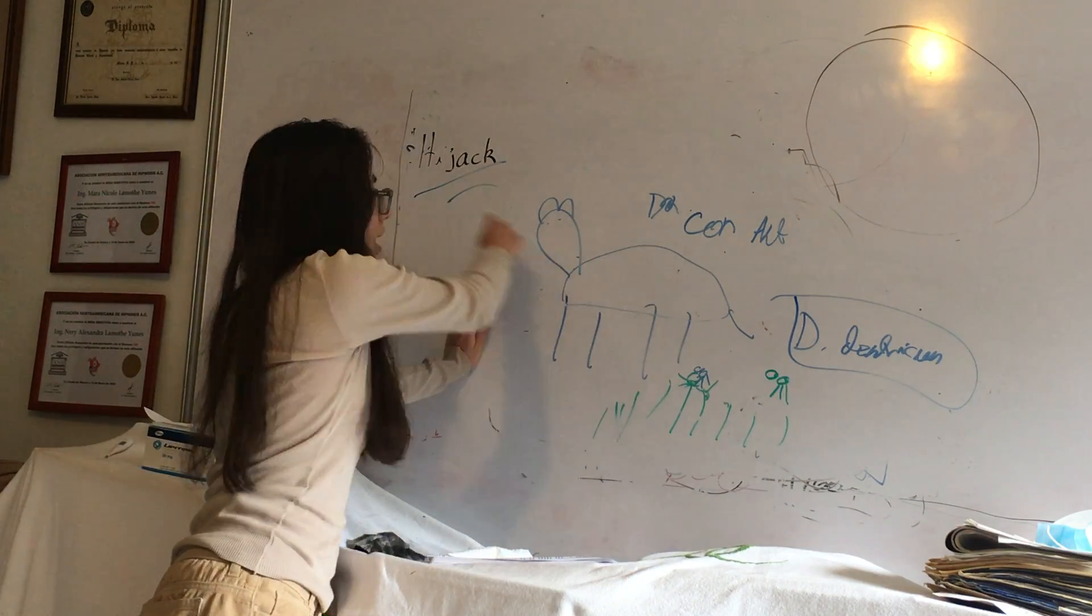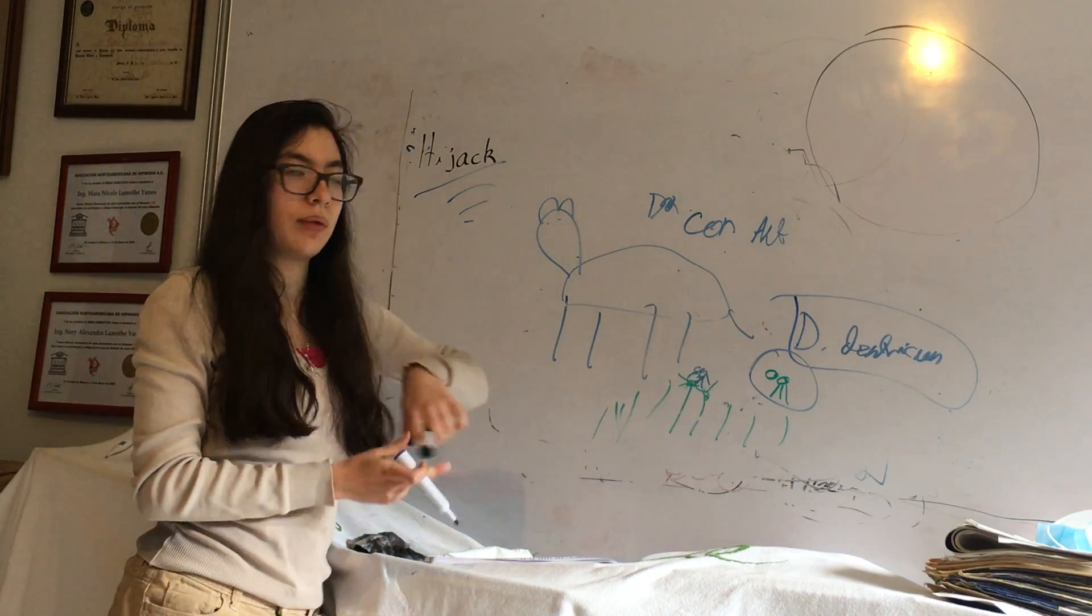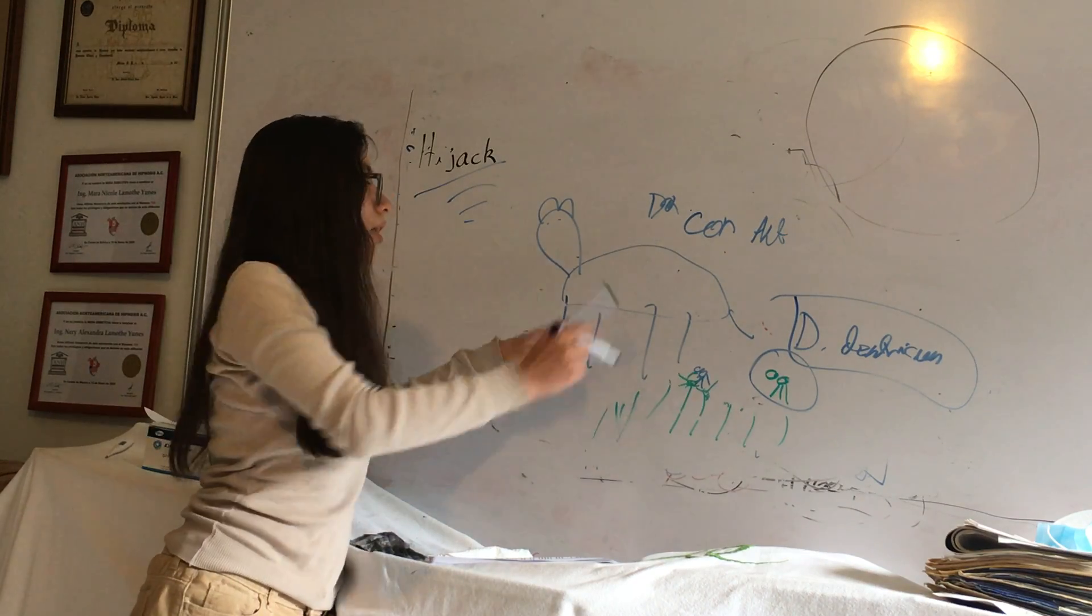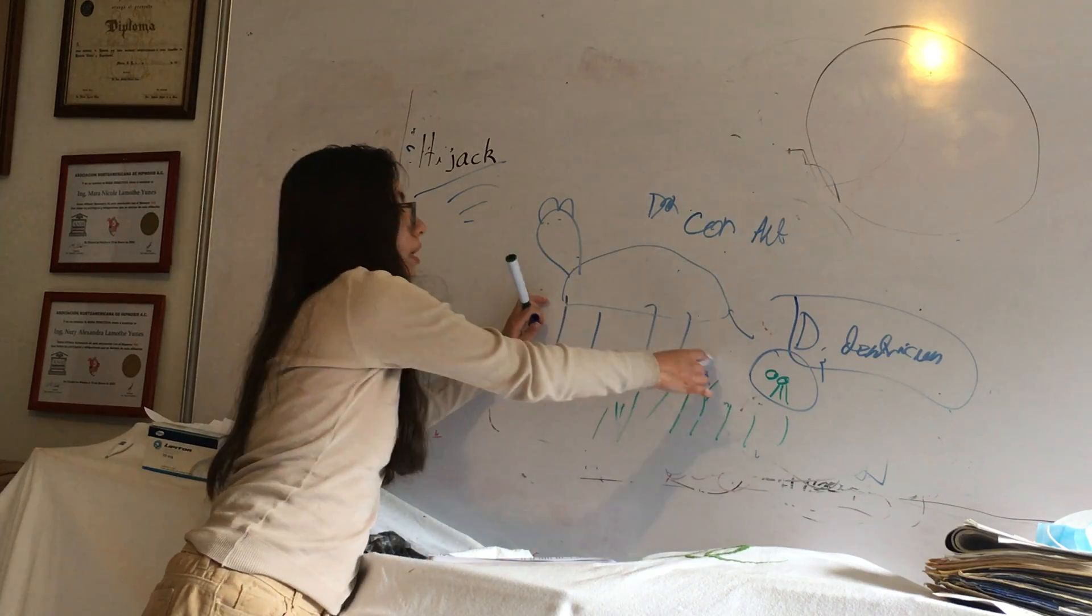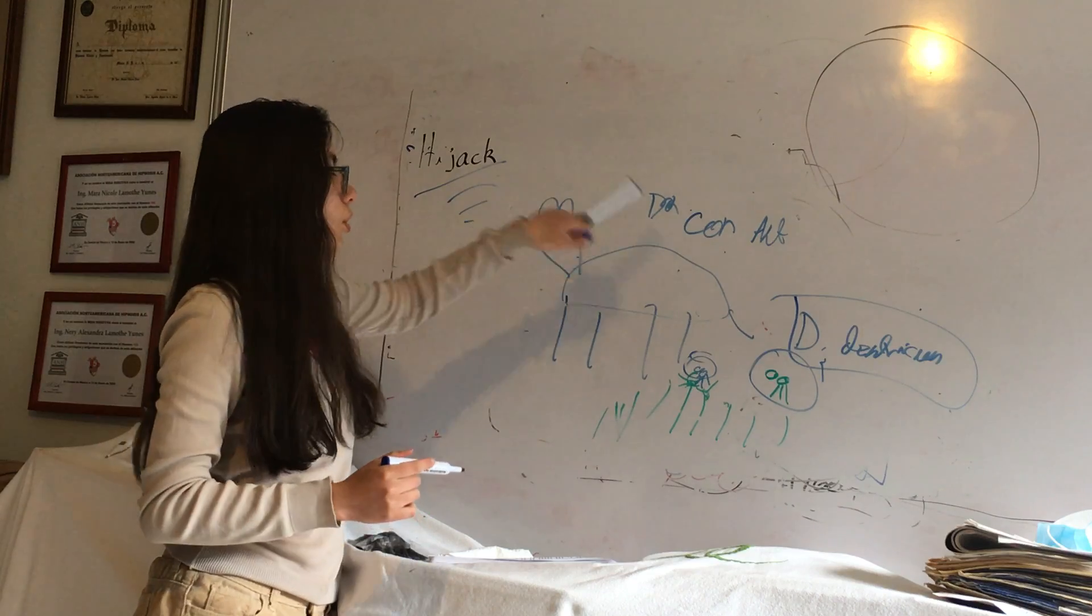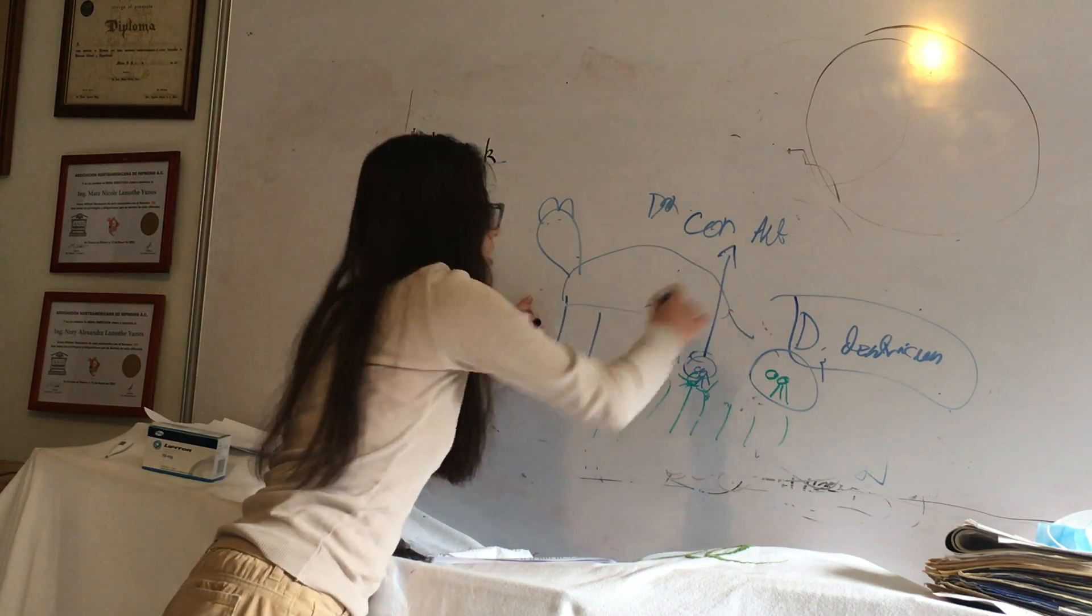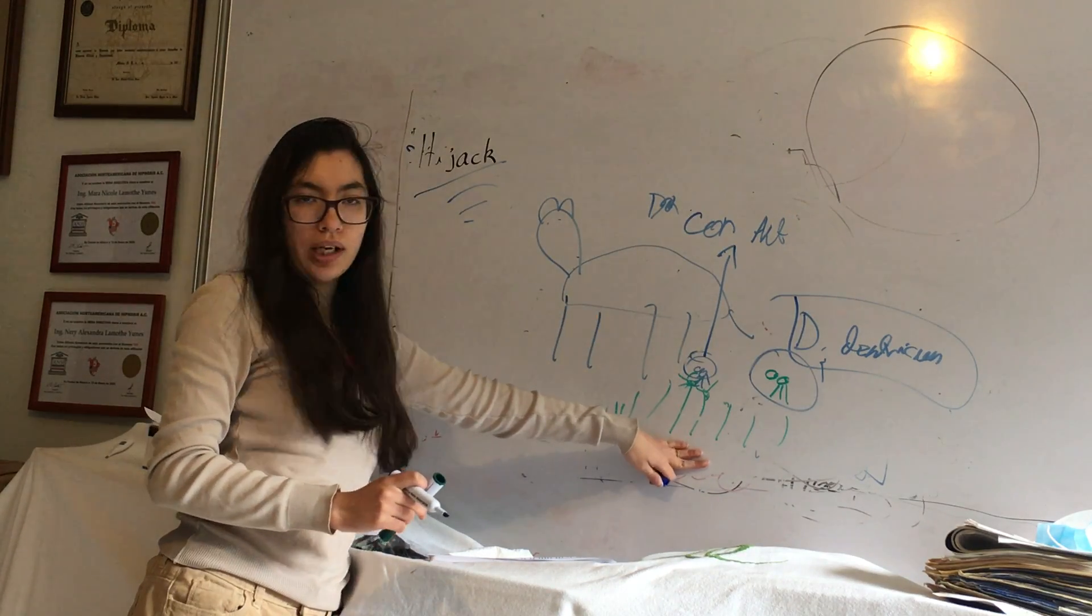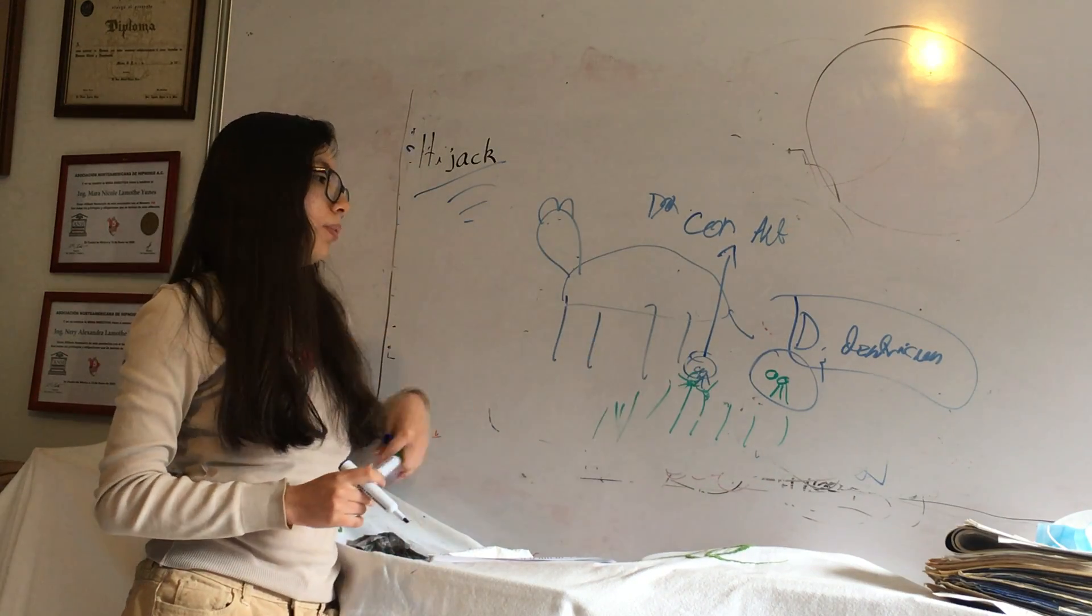The dendriticum is hijacking the ant, because now the ant is going to do something that by itself it never would have done. Now that it's infected with the dendriticum, it's going to go up on the top of the flower, and it's going to be very easy for the cow to see them, eat it, and it will die. So the dendriticum hijacks or manipulates the mind or the conduct of the ant. That is hijack, this is an example.